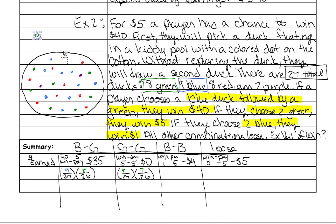Now we have to do the last situation — put the green duck back. The probability of getting a blue one first: there are 9 total blue ones out of 27 total ducks. Let's pull that blue duck out. Now how many ducks are left? There are 8 blue ducks remaining out of a total of 26 ducks.